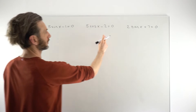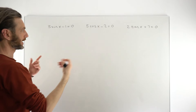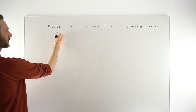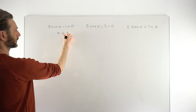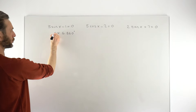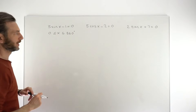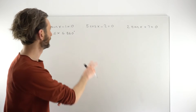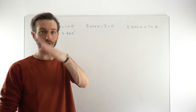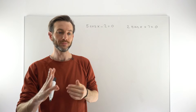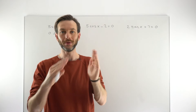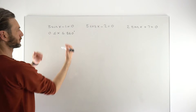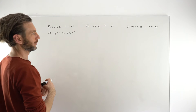We've got three trig equations to solve in degrees with a calculator. Any time you get a trig equation, it should come with a corresponding range of values. That's because the trig functions — thinking about things like the sine graph — carry on forever. If you don't restrict your range, the solutions would carry on indefinitely, so every trig equation comes with a corresponding range of values.